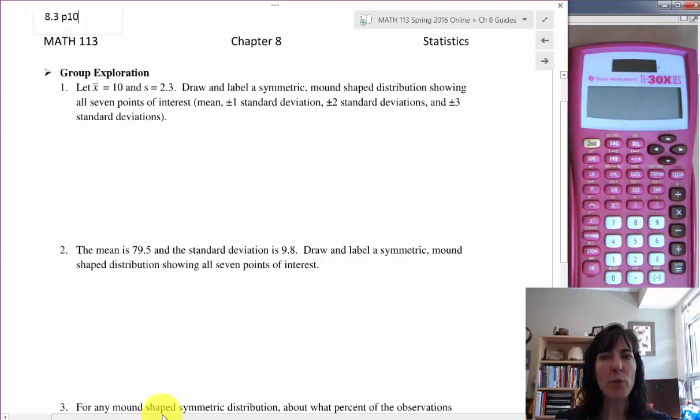So let's look at some actual information from a sample and make it a little bit more concrete. I was just telling you the theory there, now let's make it real. So say our mean is 10 and it's from a sample or a population. That's right, it's from a sample because we used x-bar, and we have a standard deviation of 2.3 and it says draw and label a symmetric, mound-shaped distribution showing all seven points of interest.